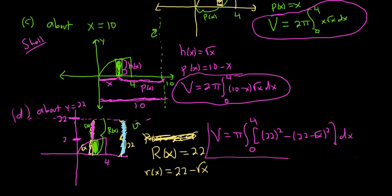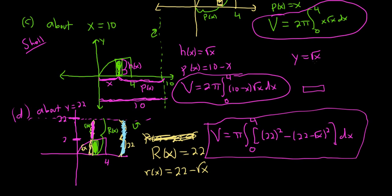So it's already been about 17 minutes of disk and shell, and I think that's good for this video. In the videos that follow, you'll see plenty of examples including horizontal rectangles — whenever you have a horizontal rectangle, you have a function of y, so you'd solve for x. For example, y = √x becomes x = y². I hope this video has been helpful.